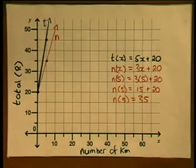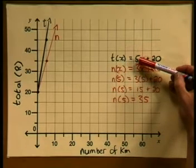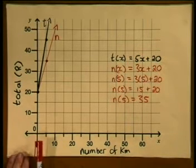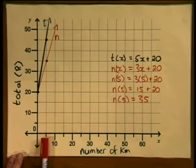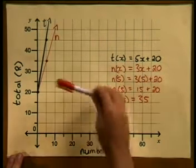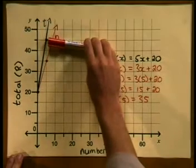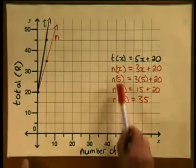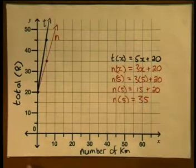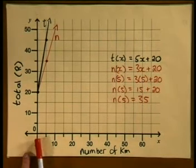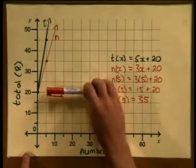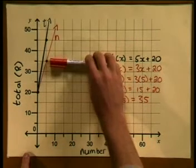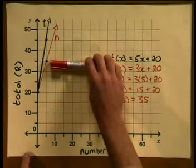We need to understand what effect the rate of change has on the output values. For the graph of t the rate of change is 5. So when the x or input values change by 5 units, in other words from 0 to 5, the output changes from 20 to 45. In other words a total change of 25 units. For the graph of n where the rate of change is 3, when the input values change by the same amount, in other words from 0 to 5, the output values change from 20 to 35, which is an overall change of 15 units.